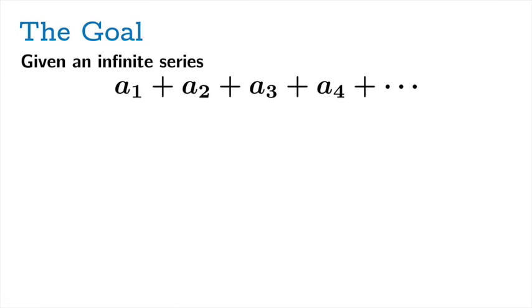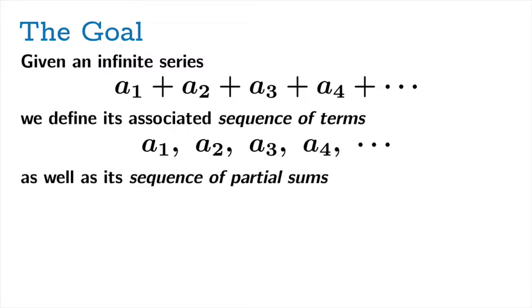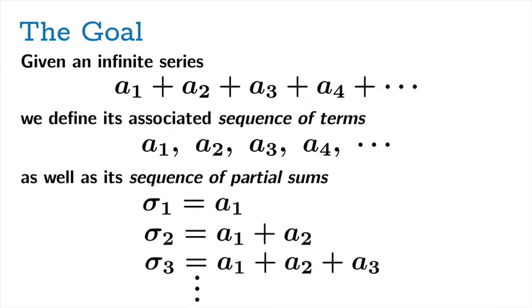So given an infinite series, we define its associated sequence of terms, which is exactly the sequence you get by stripping out the plus signs, and its sequence of partial sums which are what you get by adding up just a little bit more of the terms each time.